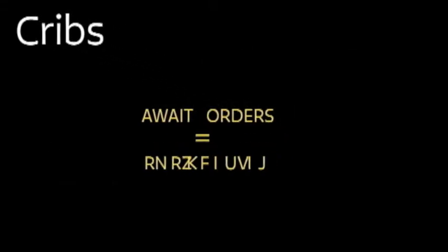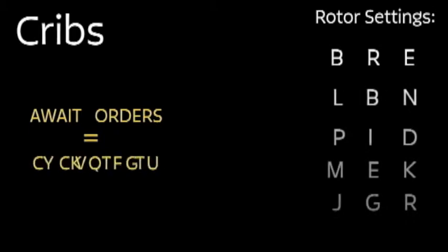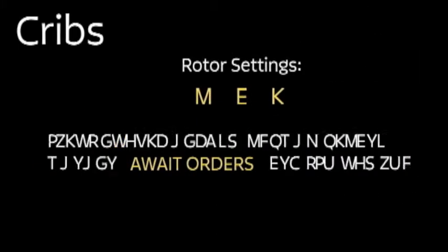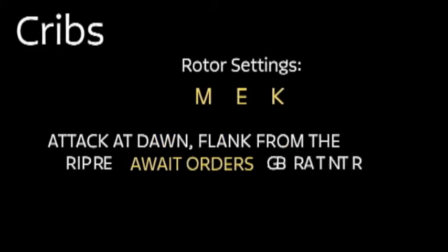The idea was to feed the message containing a crib, such as 'await orders,' through various possible beginning rotor settings that the ciphertext may have been ciphered in until the setting that produced the crib was found. These settings were then used to decrypt the rest of the message.